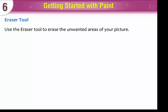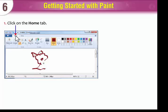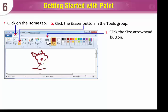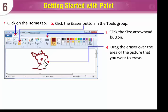Use the eraser tool to erase the unwanted areas of your picture. To use the eraser tool, click on the Home tab. Click the eraser button in the Tools group. Click the Size arrowhead button. Then drag the eraser over the area of the picture that you want to erase. The unwanted part of the image will get erased.